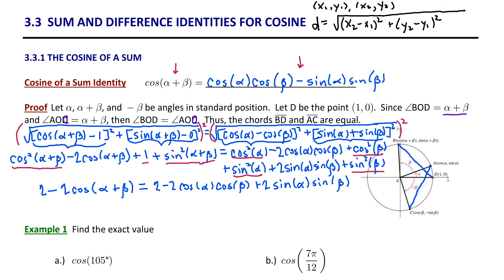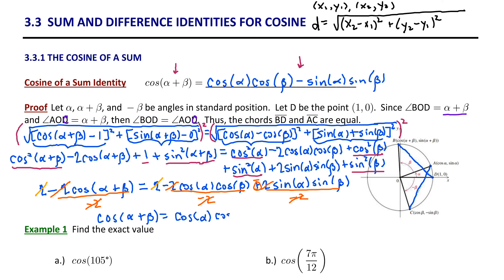To simplify this equation, we subtract the constant 2 from both sides, which eliminates it. All remaining terms have a coefficient of negative 2, so we divide each term by negative 2. When we simplify, being careful with the signs, we arrive at our cosine of a sum identity: cosine(α+β) equals cosine α times cosine β minus sine α times sine β. We have verified the cosine of a sum identity.